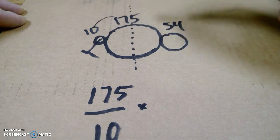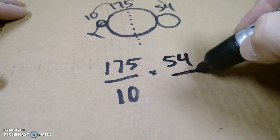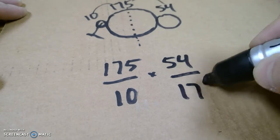First system, second system. This would be 54 over 175.